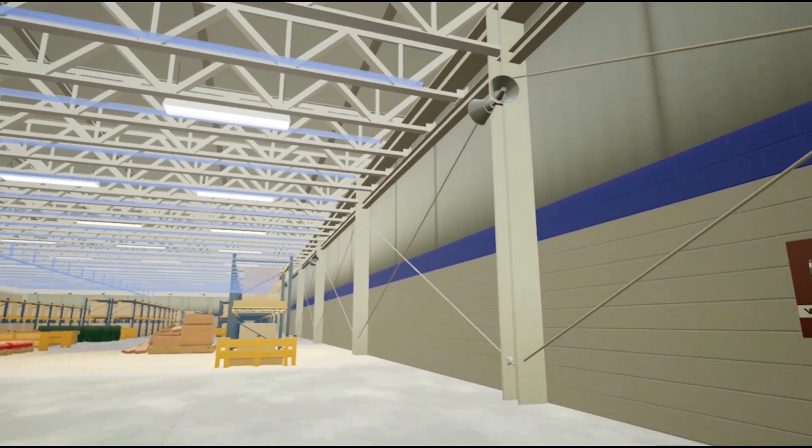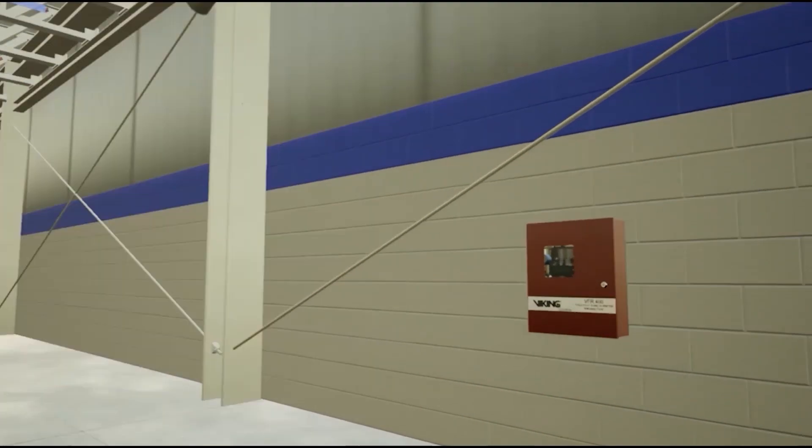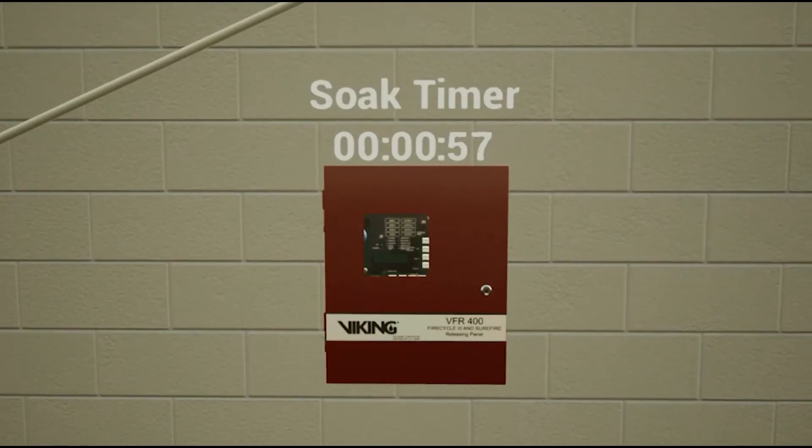The heat detector resets. The soak timer is now initiated. The soak timer is programmable. Water will continue to discharge from the sprinkler for the specified amount of time. The soak timer can be programmed between 30 seconds to 30 minutes.